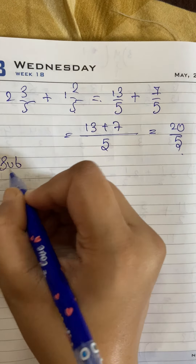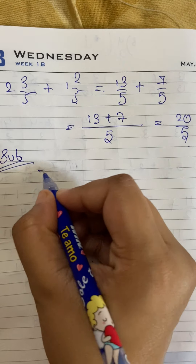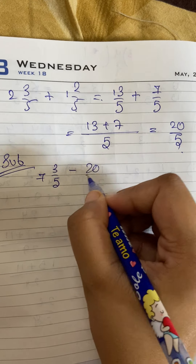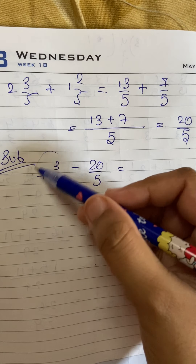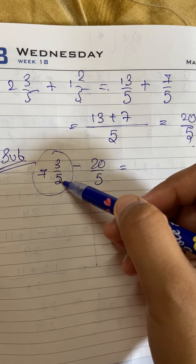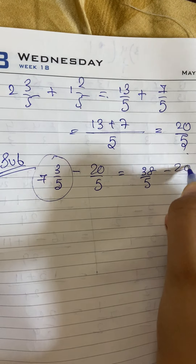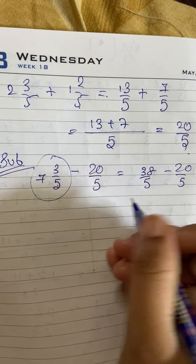Now for the subtraction: from 7 and 3 by 5, write 7 and 3 by 5 in front, then minus 20 by 5. Convert 7 and 3 by 5 to improper: 7 into 5 is 35, plus 3 is 38 by 5. Then with common denominator, 38 minus 20 gives 18 by 5. Write this in mixed form: 5 threes are 15, remainder 3, so the answer is 3 and 3 by 5. Remember not to simplify 20 by 5 earlier.